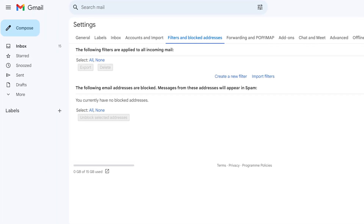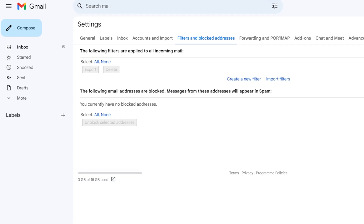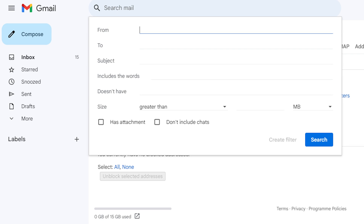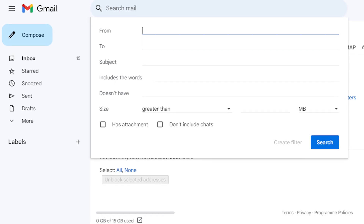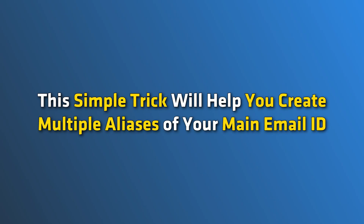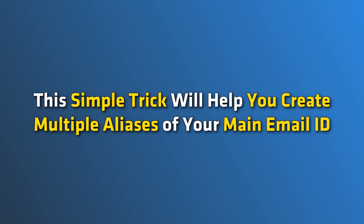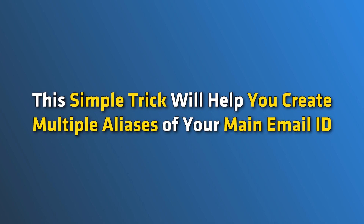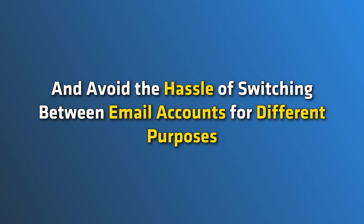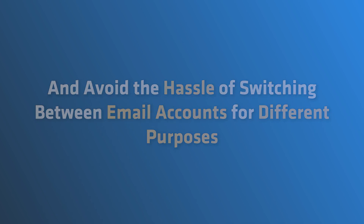You can also use the filter feature in Gmail to sort the emails and keep them in separate folders for better management of the inbox. This simple trick will help you create multiple aliases of your main email ID and avoid the hassle of switching between email accounts for different purposes.